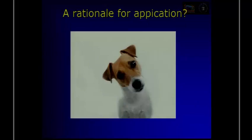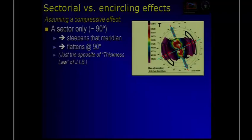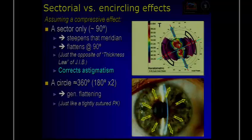How can we apply them? Assuming a compressive effect, you can have a local effect when there is an increase in the curvature of the axis, and you can also have a general effect. There is a general flattening, as happens in a cornea transplantation. So we have to move from increase in curvature to decrease in curvature, and this happens when the rings become more circular.